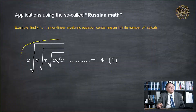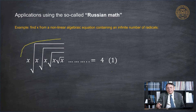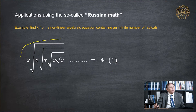Let us consider this first example. It is a very scary equation because it has many — actually an infinite number of radicals. There are an infinite number of radicals.